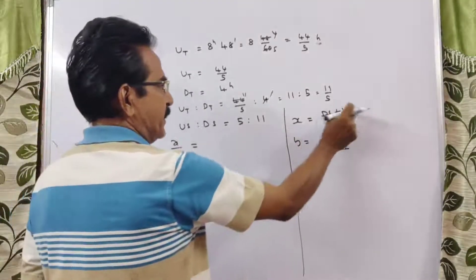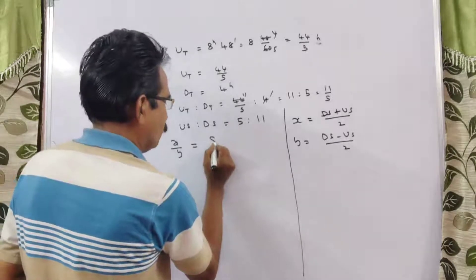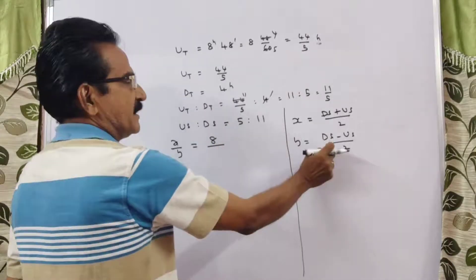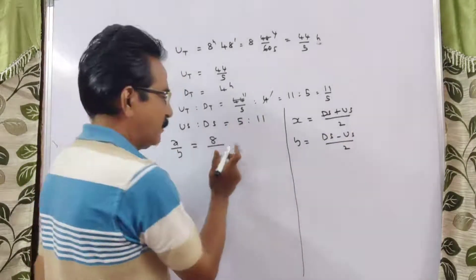X is equal to ds plus us by 2, which is 11 plus 5 by 2, 16 by 2, that is equal to 8. Second one, y is ds minus us by 2, 11 minus 5 is 6, 6 by 2 is 3.